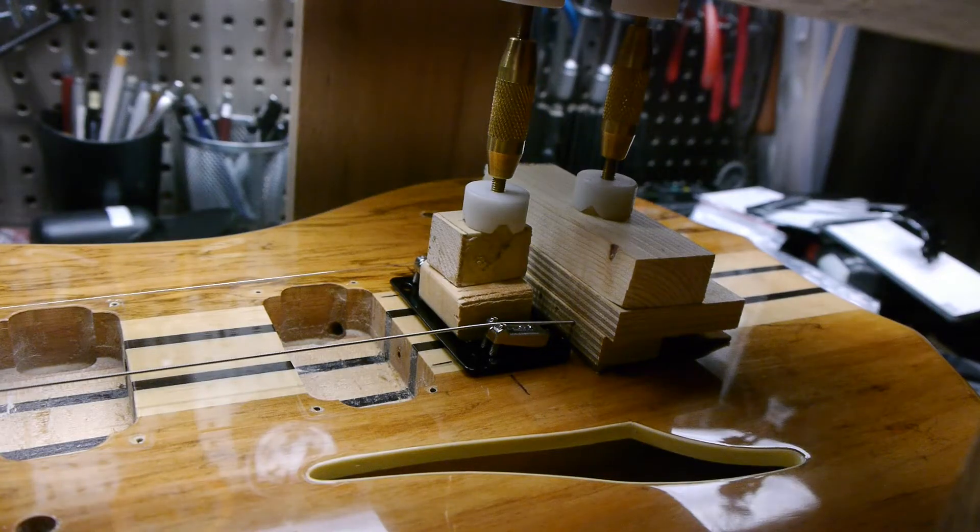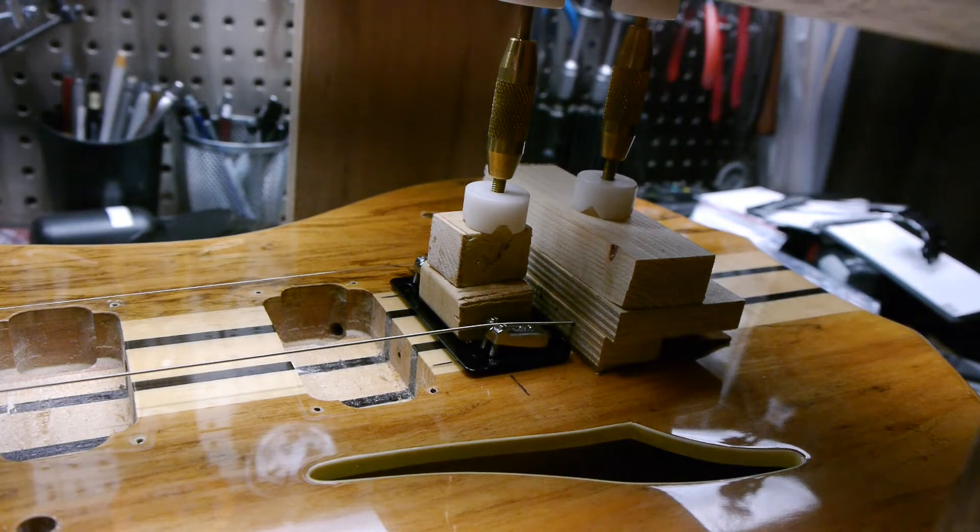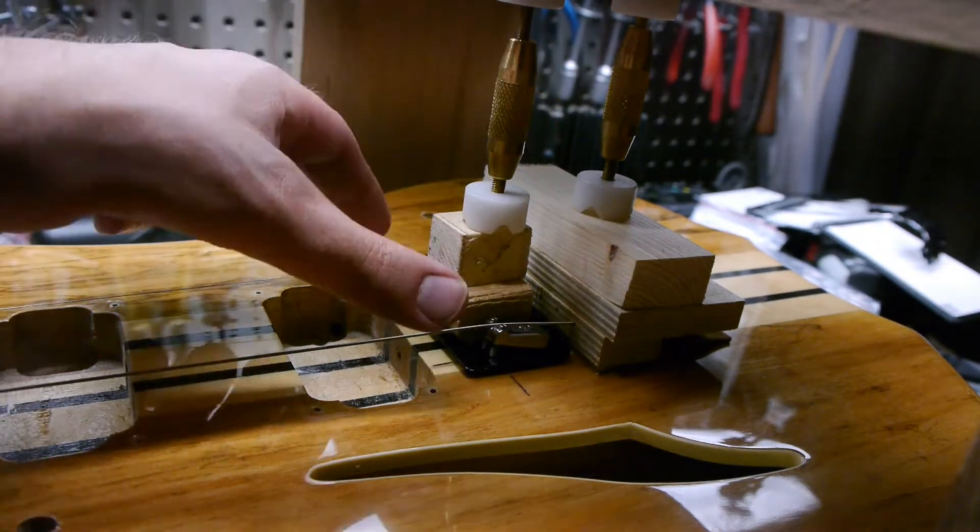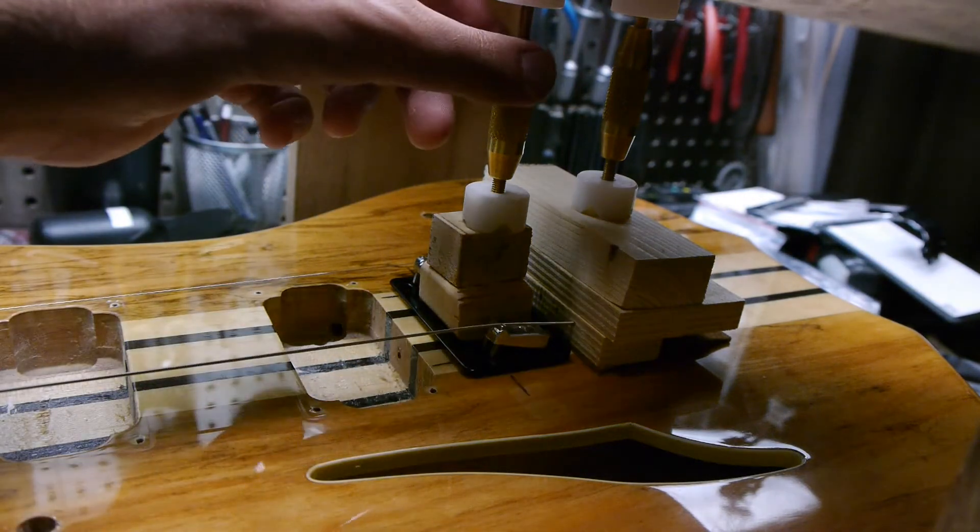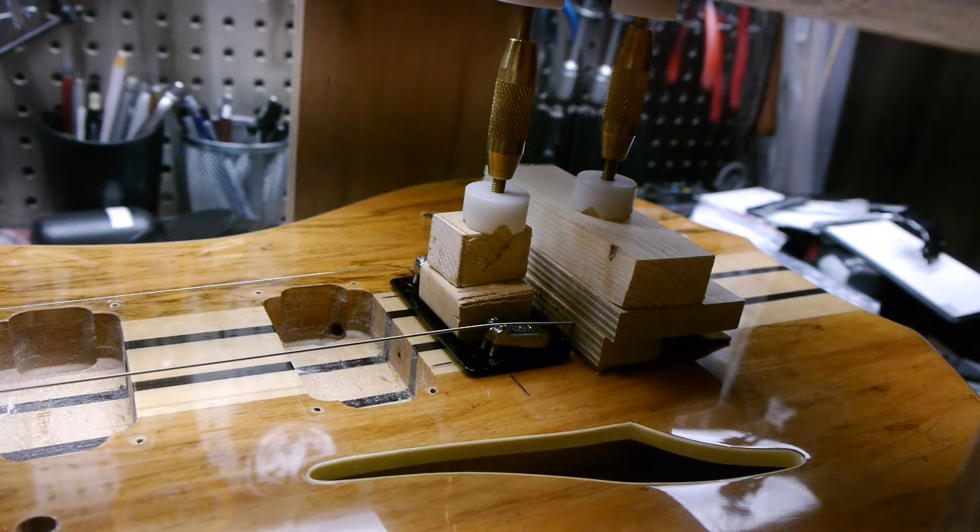As you can see, the intonation is a little flat, so the bridge has to come forward a bit. Loosen the strings, loosen the turnbuckle, move the bridge forward or back wherever you got to move it. Tighten the turnbuckles back up. Tighten the strings back up. Check again.